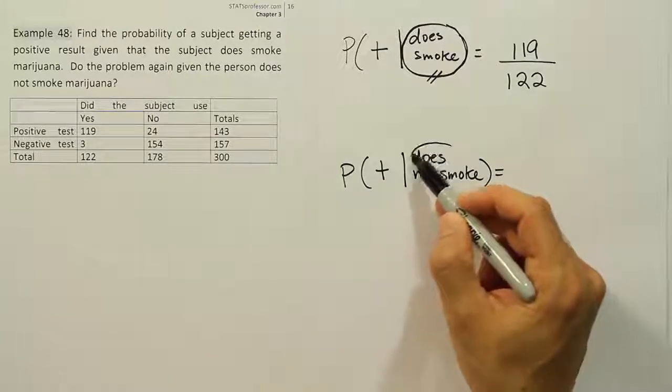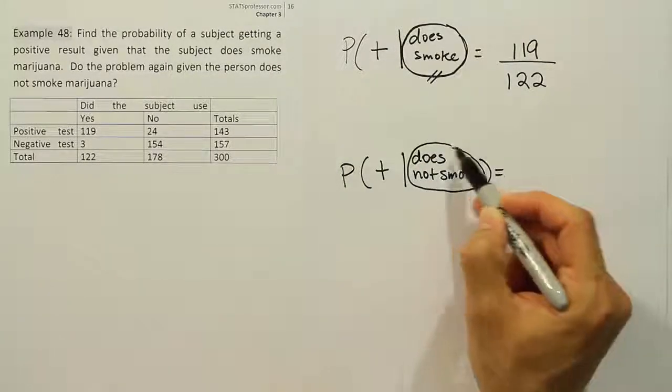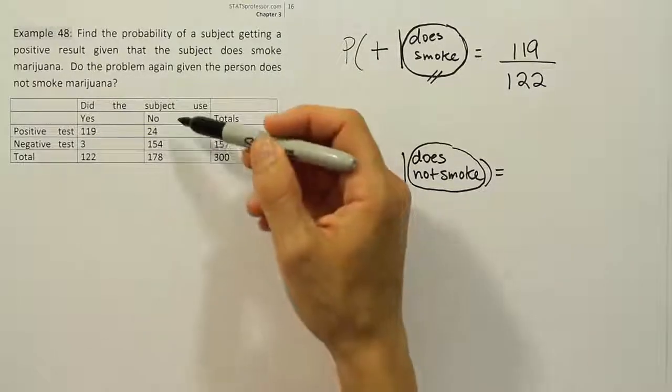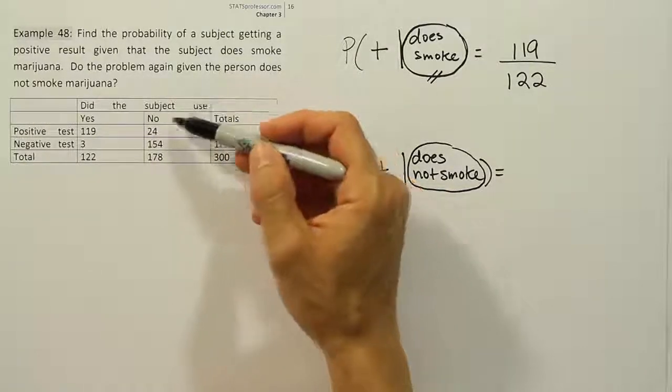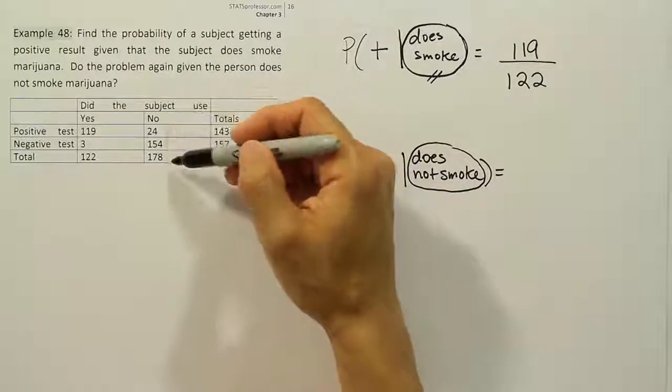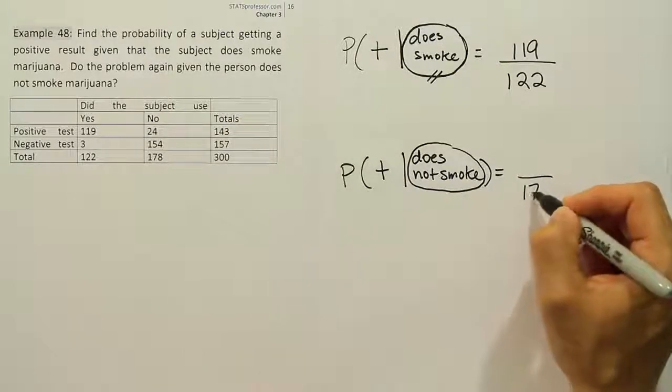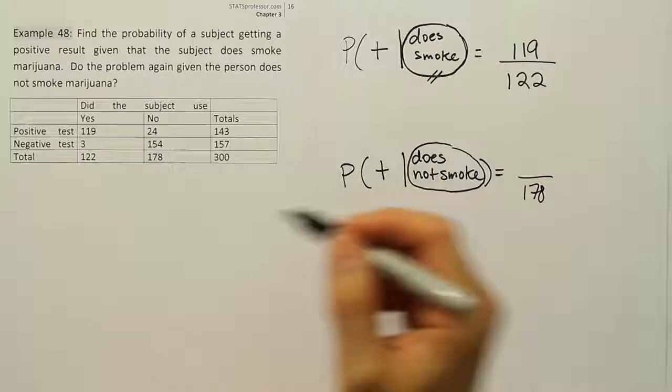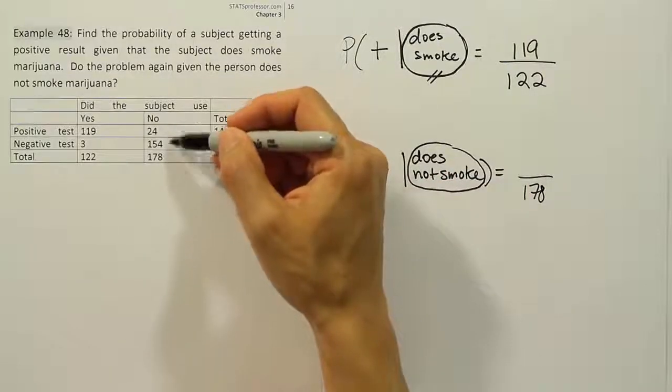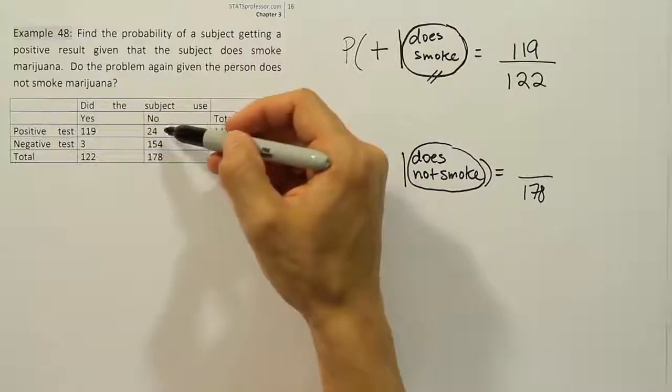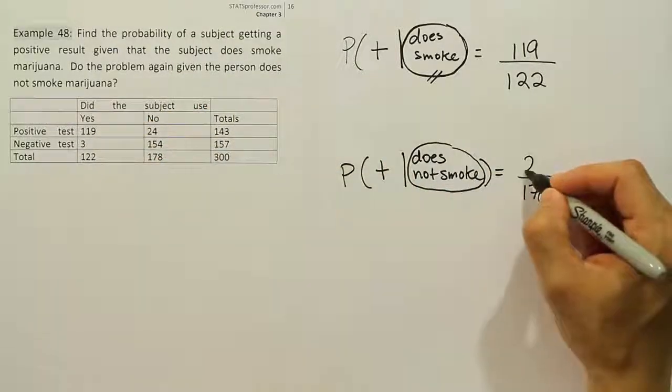If you look at the second probability, we're looking at the column that corresponds to does not smoke marijuana. And that would be this column. Did the subject use? No, they don't. So we're going to focus on that. The denominator becomes the total of that column, which is 178. And then we're simply looking for the number that corresponds to positive among the remaining two numbers. So among the remaining two numbers in that column, positive test results, 24 fit that criteria.